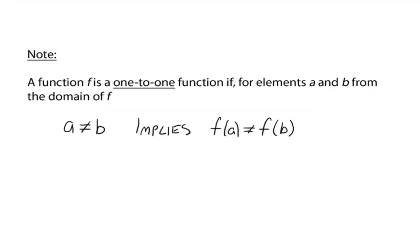So now we're going to talk about one-to-one functions. What exactly is a one-to-one function? A function f is a one-to-one function if for elements a and b from the domain of f, your two elements that you choose from the domain are not the same elements, and that implies that their corresponding y values are not the same. In other words, if you take two different x values, you get two different y values — always. If that always happens, then you have a one-to-one function.